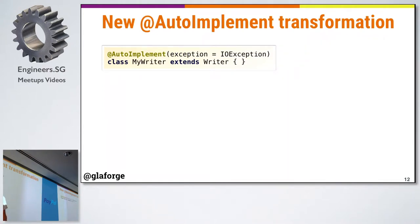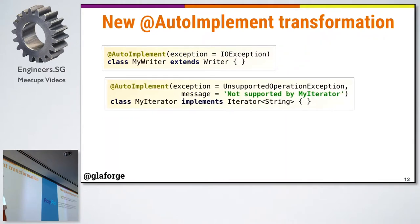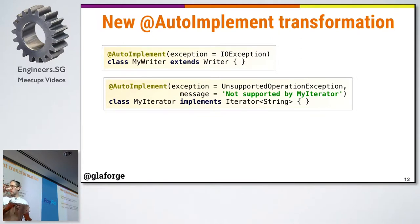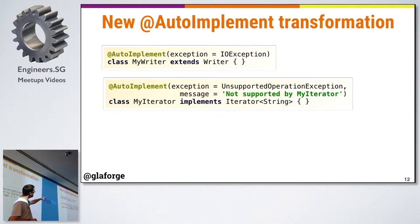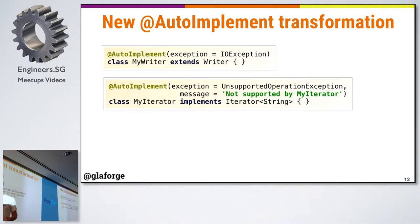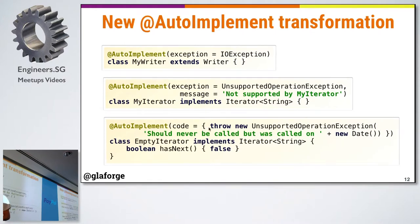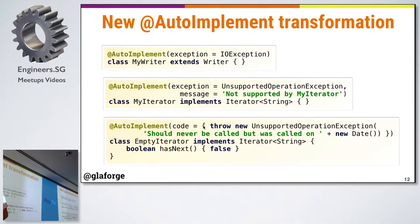You can also customize what exceptions are thrown by the auto-generated method bodies. You can say you want an IOException thrown, or a particular exception with a message, or you can pass a closure directly with custom code to be used inside the implementation — for example, to throw a custom exception.